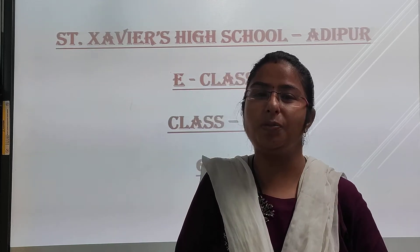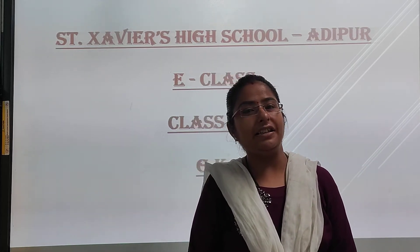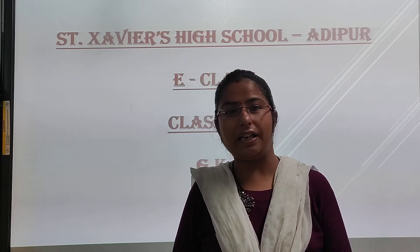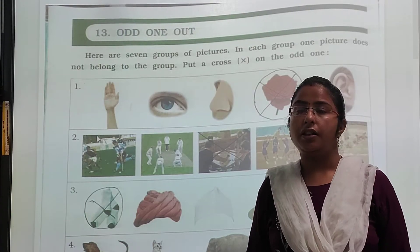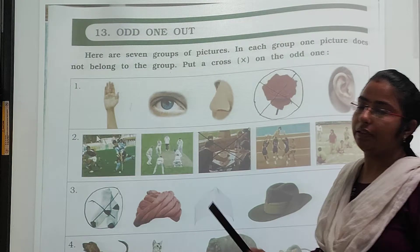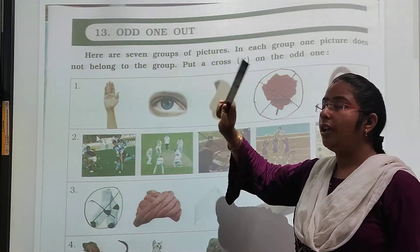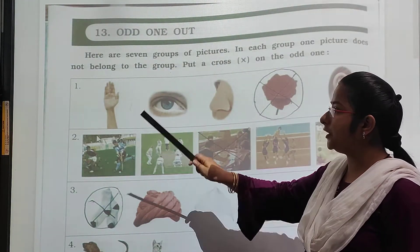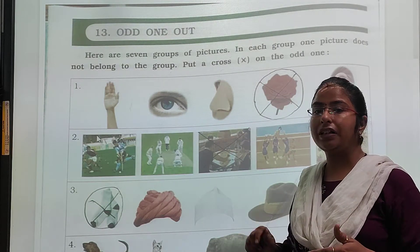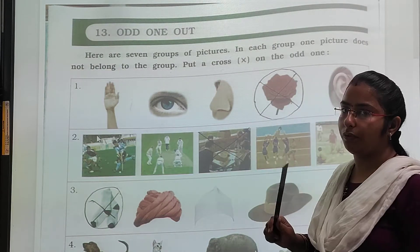Good morning students. Hope you are fine and healthy. In this session of GK, we will do chapter number 13 and 14. Chapter number 13 — the name of the chapter is Odd One Out. In this chapter, pictures are given and you have to put a cross on the odd one.